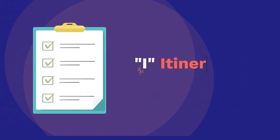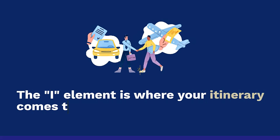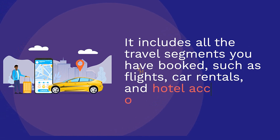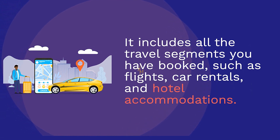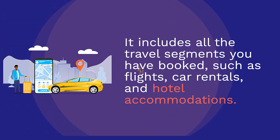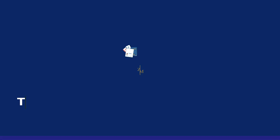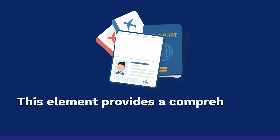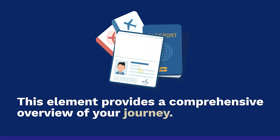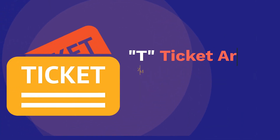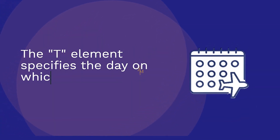I — Itinerary Element. The I element is where your itinerary comes to life. It includes all the travel segments you have booked, such as flights, car rentals, and hotel accommodations. This element provides a comprehensive overview of your journey.